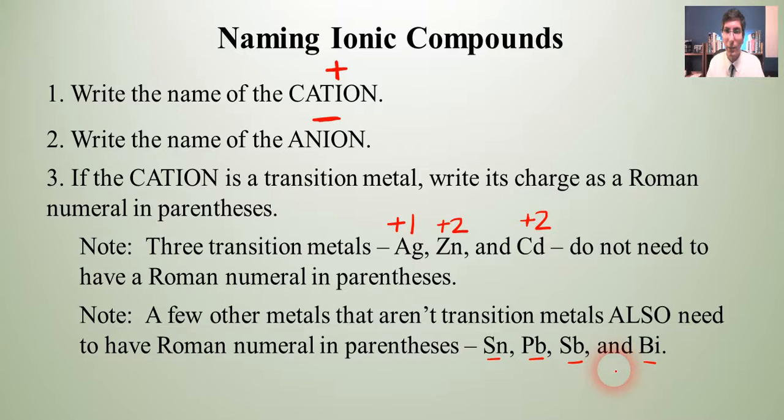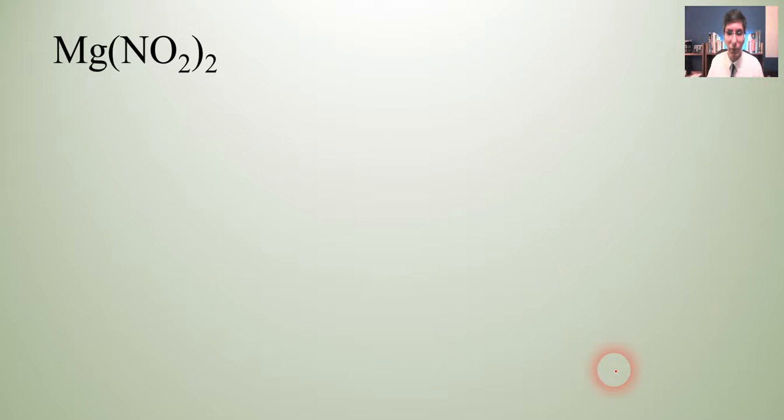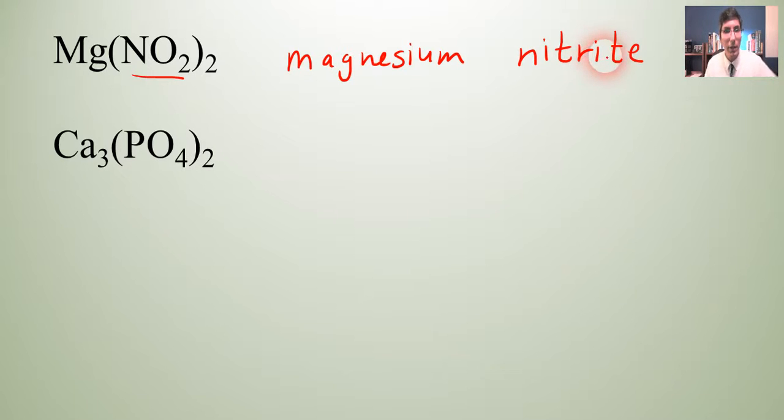So let's get some practice here. And just like in the last video, we'll start out slow and then we'll work our way to some more advanced examples. So we'll start with this example. And once again, it's just a matter of naming the first one and then naming the second one. So Mg up here is going to be named as magnesium. And then we have the NO2, which hopefully you've learned the ions from the ion chart. And if not, you can see that it's going to be nitrite. So magnesium nitrite.